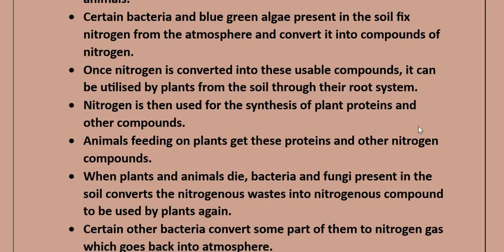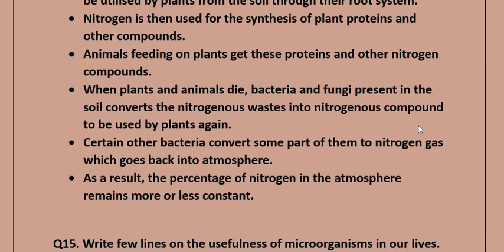When plants and animals die, bacteria and fungi present in soil convert the nitrogenous waste into nitrogenous compounds to be used by plants again. Certain other bacteria convert some part of them back into nitrogen gas, which goes back into the atmosphere. As a result, the percentage of nitrogen in the atmosphere remains more or less constant.